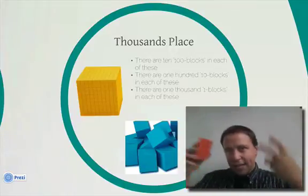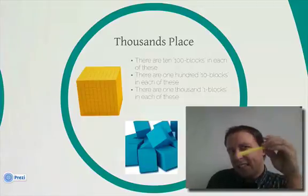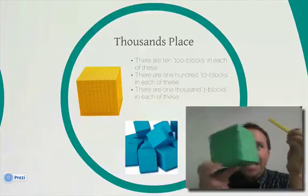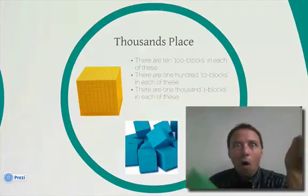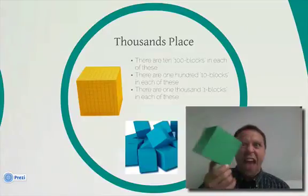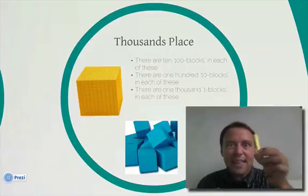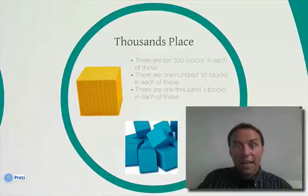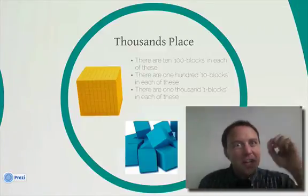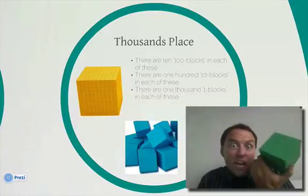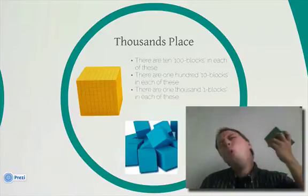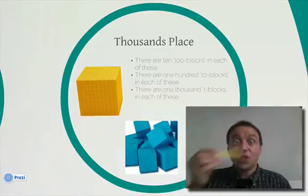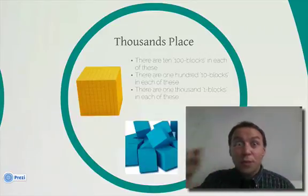Think about it this way: if you had nine 10 blocks, you have 90 little single blocks. Or you had one thousand block — what would you rather have? Obviously one of these, right? You'd rather have a thousand block than nine 10 blocks. So that's what we're trying to see when we think of place value. Just because the number might be smaller — this is just a one thousand block — it's still going to be way bigger than if you had nine of these 10 blocks. It's very important where our numbers fall in their place values.